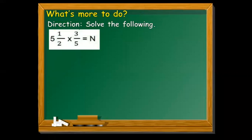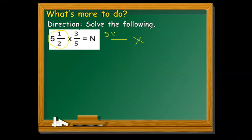Let's solve another exercise: five and one-half times three-over-five equals n. First, change the mixed number to an improper fraction. Multiply the whole number 5 by the denominator 2: five times two equals ten, plus one equals eleven. Copy the denominator — so five and one-half becomes eleven-over-two.